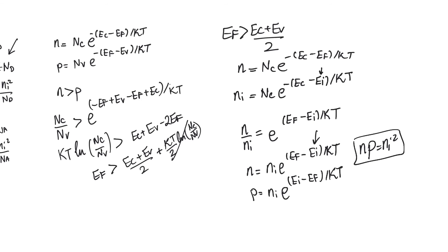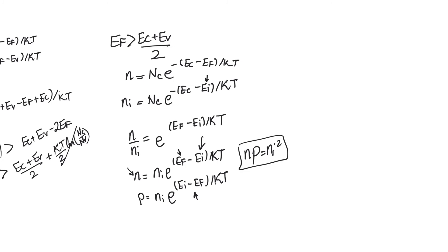These two equations express carrier concentration in terms of intrinsic carrier concentration. N increases above the intrinsic level if EF rises above Ei, and drops below the intrinsic level if EF drops below Ei, with the opposite behavior for P. Importantly, when we say N times P equals Ni², this doesn't mean conductivity is constant. In fact, adding any net doping to silicon increases its conductivity significantly, because while the product N·P is constant, their sum is much larger, and as we will see in the next video, conductivity increases substantially.